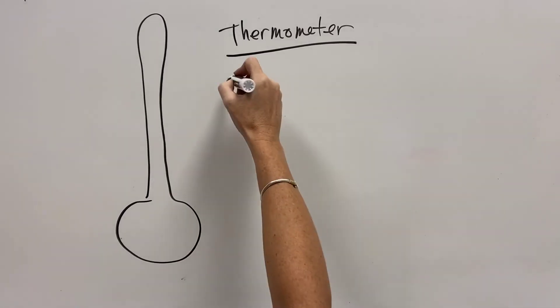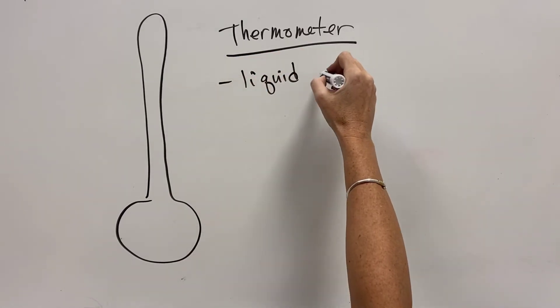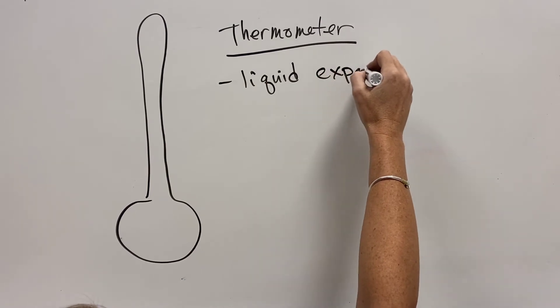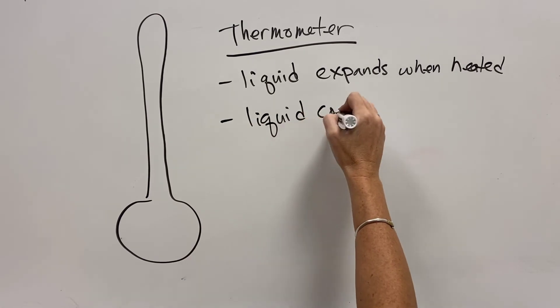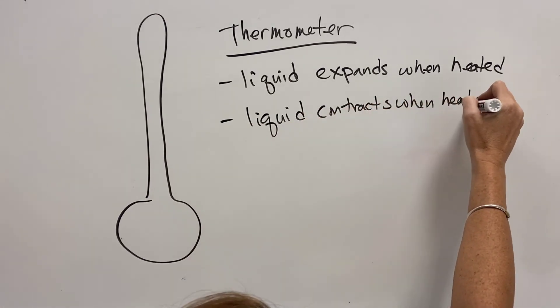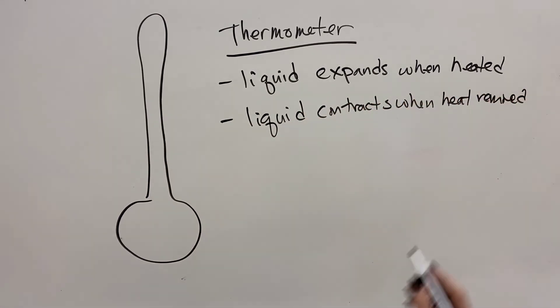So then now we're going to look at a thermometer and how these things work, right? So inside of a thermometer is liquid. And when you add heat to the liquid, it expands. And when you remove heat from that liquid, it contracts. As it expands and contracts, it moves up and down the thermometer.